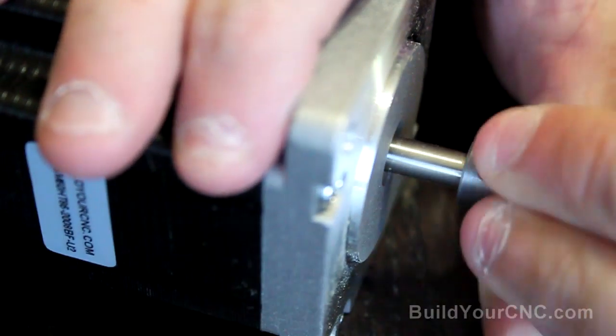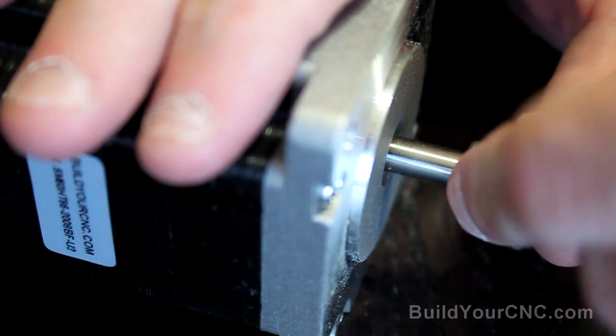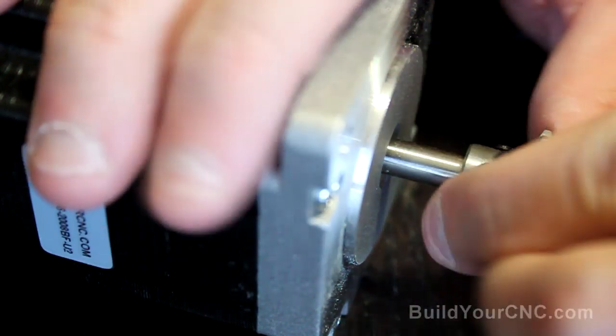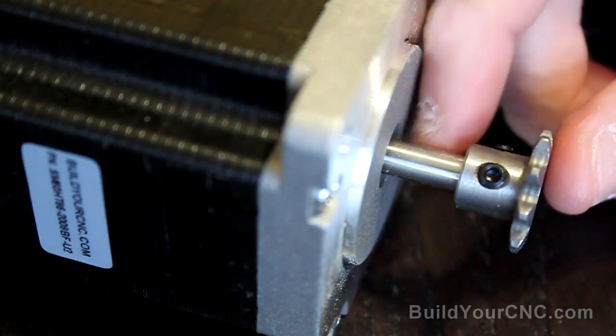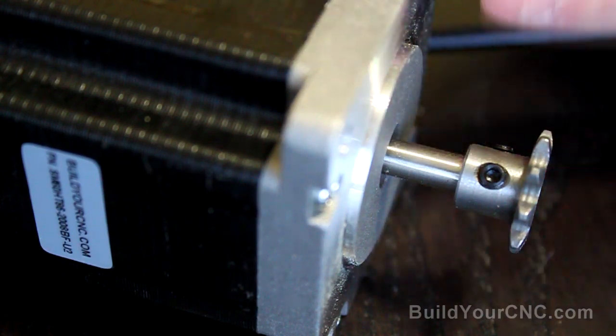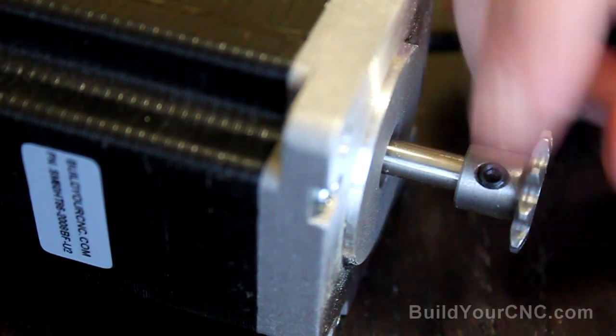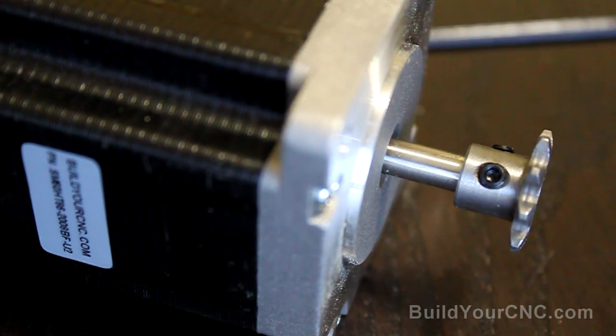And you want to get this as tight as possible because these can slip. It's good that they have two set screws, so it makes it a better connection. But the shafts of these motors are hardened, so it can get a little slippery. So just tighten them as tight as you can and they should be fine.